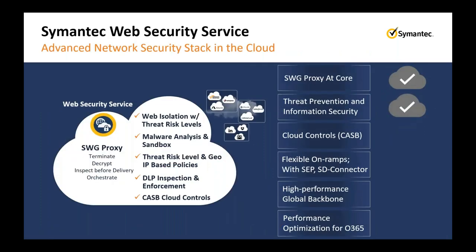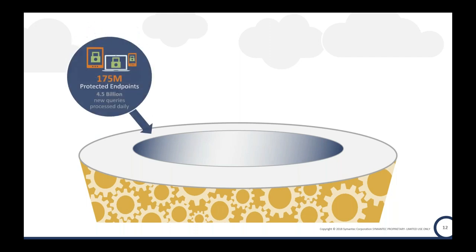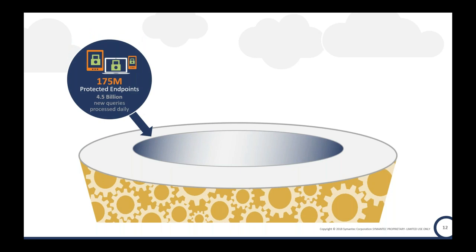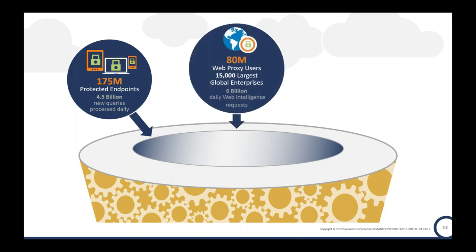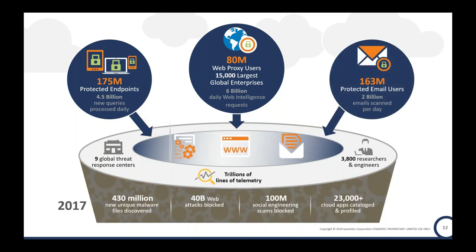On threat prevention and information security: we have the Global Intelligence Network (GIN), the largest civilian threat intelligence network, fed by multiple vectors. We take information from enterprise and consumer endpoints — Symantec and Norton — covering around 175 million endpoints, plus over 80 million web proxy users from BlueCoat and previous Symantec products, as well as email users. This data is correlated and analyzed using AI capabilities to find patterns, identify malware, and feed that intelligence out to our customers as part of the GIN integrated into the products you subscribe to from Symantec.